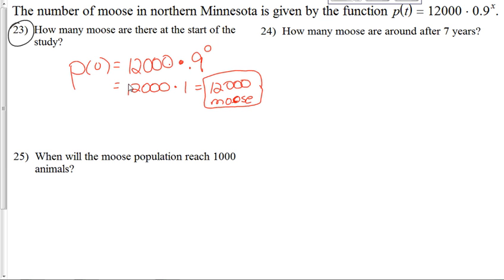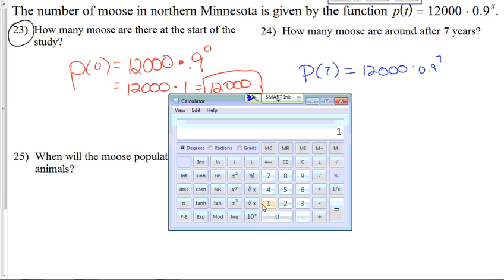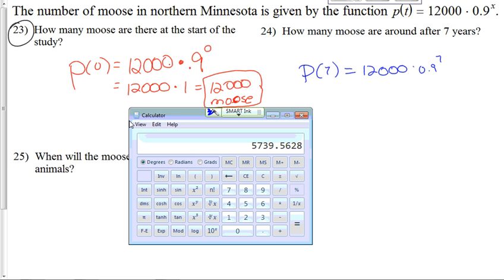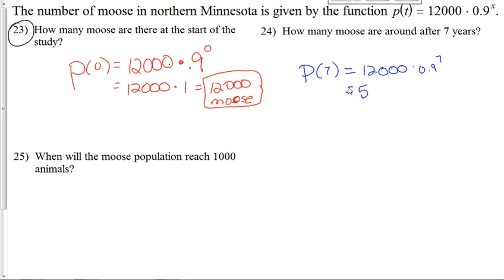And then it says how many moose will be there after 7 years. Well, really what we're trying to find is P of 7, which is 12,000 times 0.9 to the 7th power. So on your calculator, 0.9 to the 7th power is this, and then multiply by 12,000. I end up with that. Now I'll write that whole decimal down. And you might think, well, what do we do with those numbers back here? Can we have partial moose? Probably not. So 5,739 moose is what we have left after 7 years.